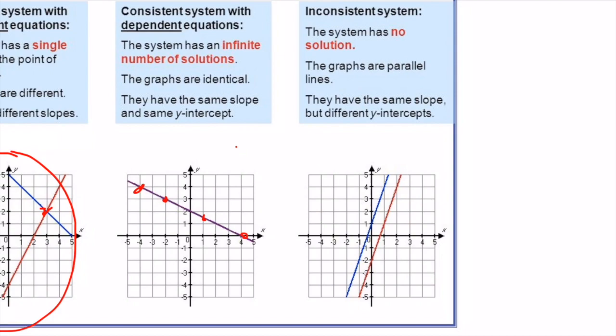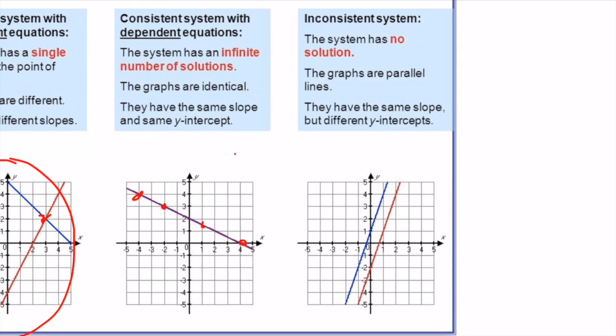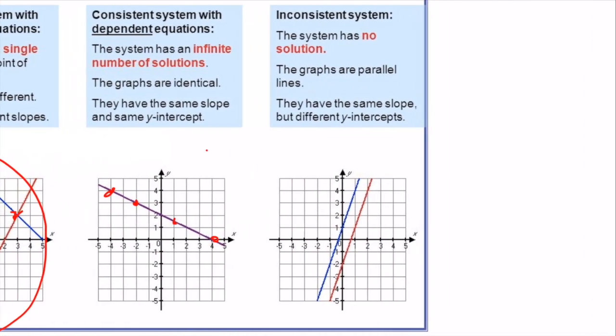The third scenario is that the lines are parallel — they will never touch, meaning they do not have a solution. There's no (x, y) that will satisfy both equations. They have the same slope but a different y-intercept.